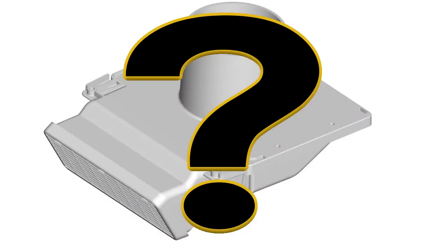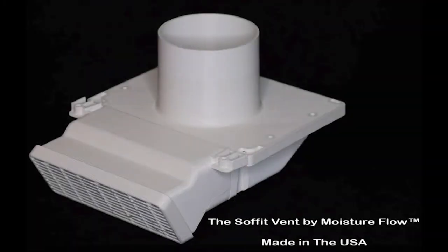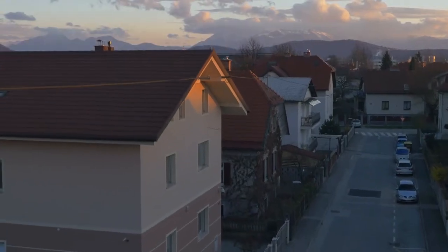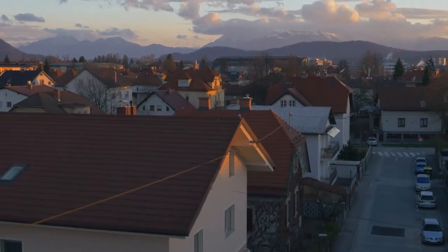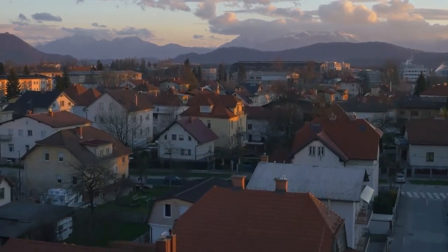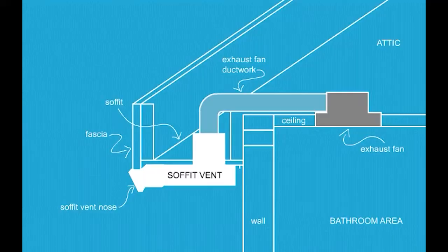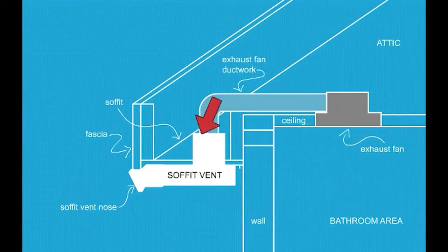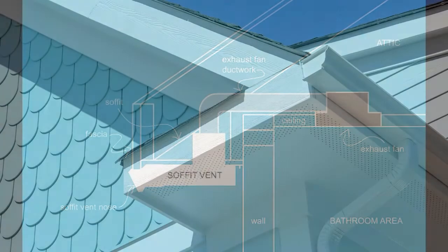How is the soffit vent from Moisture Flow different than all the other types of vents sold on the market? The soffit vent by Moisture Flow is used as the termination of a bathroom exhaust fan. The International Code Council requires that all full bathrooms with a shower or tub must have an exhaust fan to remove moist air to the exterior. The most practical means is venting through the soffit, releasing moist air outside the passive airflow of the soffit.